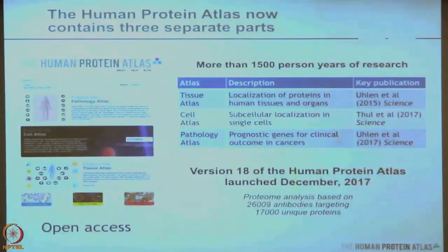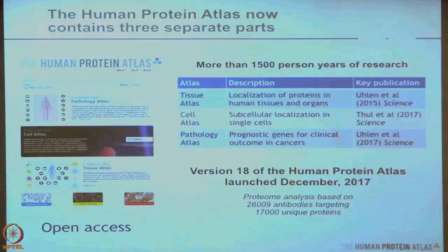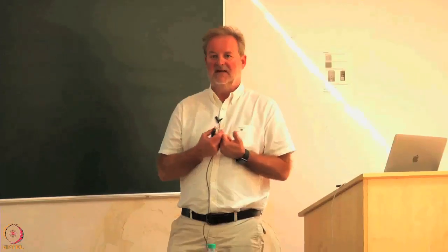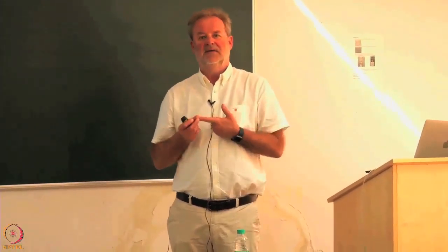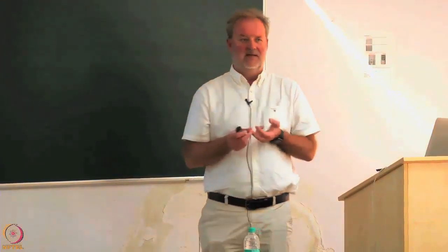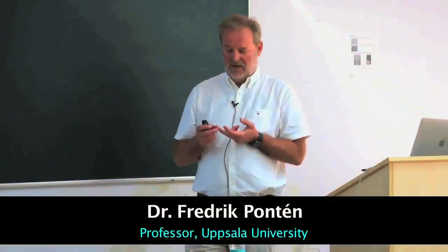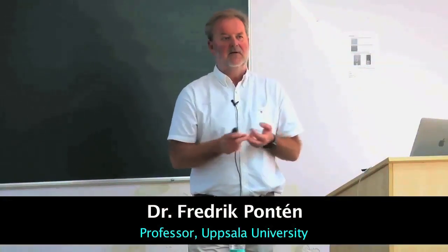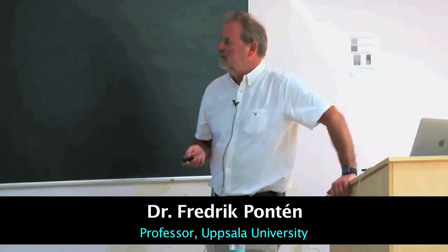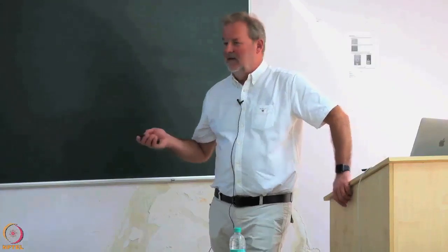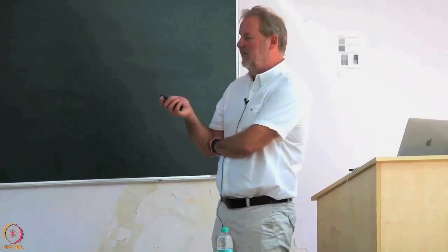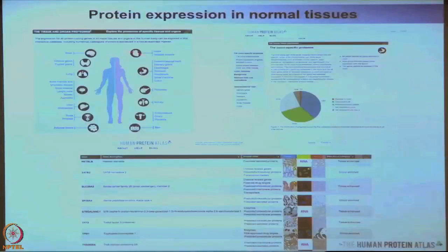Today the Human Protein Atlas has three pillars: the tissue atlas, which shows in which organs and cell types our genes are expressed; the cell atlas, which shows in what organelles our proteins are expressed within the cell; and the pathology atlas, which shows how gene expression correlates to survival for cancer patients. I will show you a couple of slides from the web portal, starting with the tissue atlas.